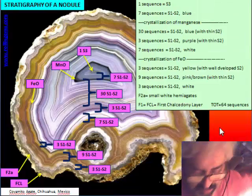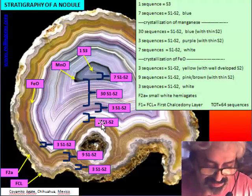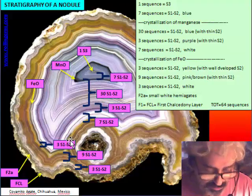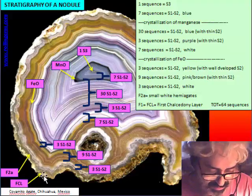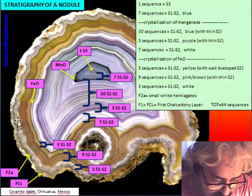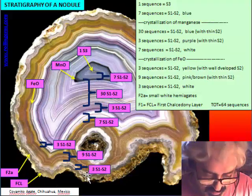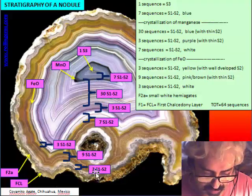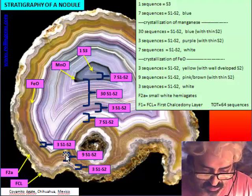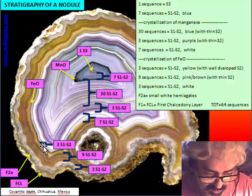We try to make the same with another nodule. We can see this nodule about the behavior of color inside an agate. We make the complete stratigraphy. We have the first chalcedony layer, that is facies S1. Then there is here some hemi-agate, that is facies S2a. They are very small but on the top of the first chalcedony layer. Then we have three sequences white S1, S2. Then there are nine sequences also S1, S2, but in different colors.